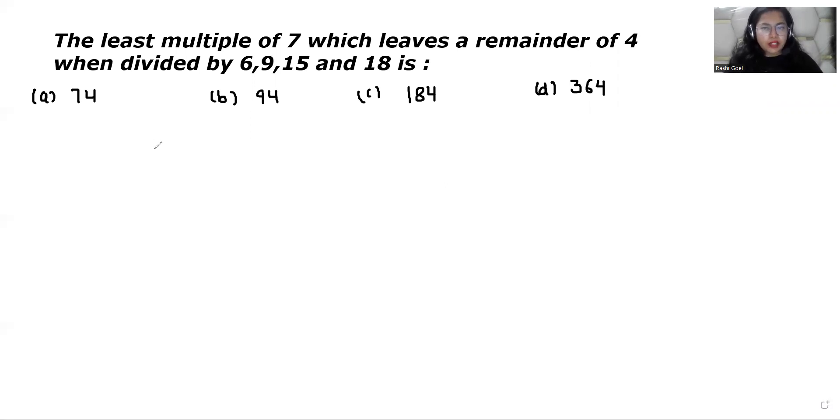So what we have to do: first we find the LCM of the numbers 6, 9, 15 and 18 which is 90. LCM is least common multiple.